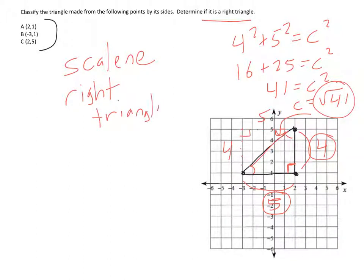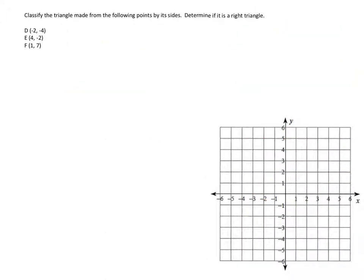So that is one example. Let's look at one that's a little more difficult. So here, let's sketch the points. Negative 2, negative 4 is located here. 4, negative 2 is located here. And 1, 7 gets a little bit off the map, but I'll put it up here. So that's this triangle. This is the triangle.